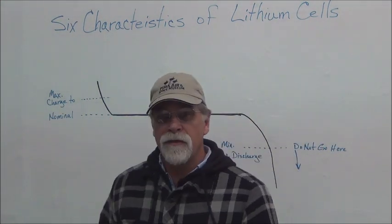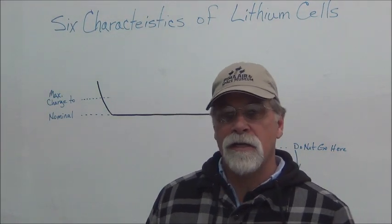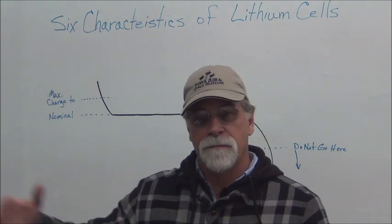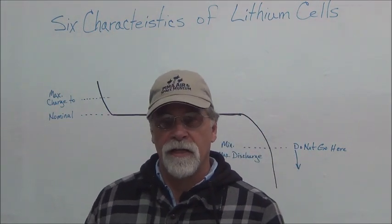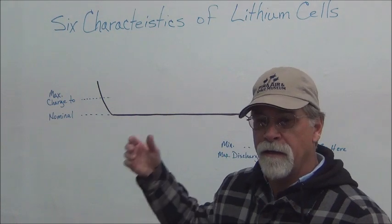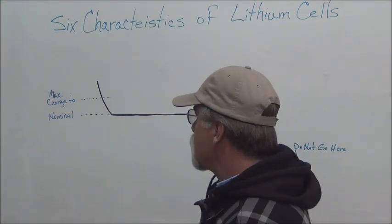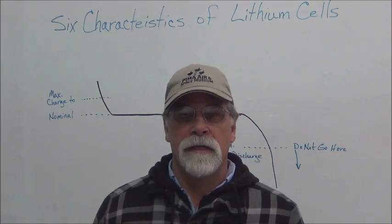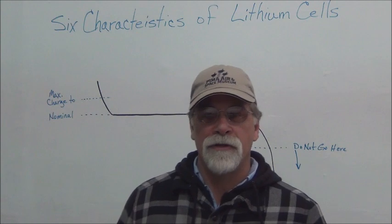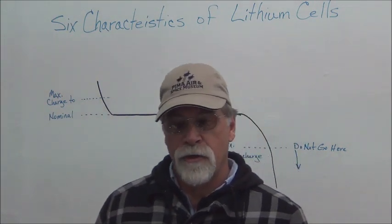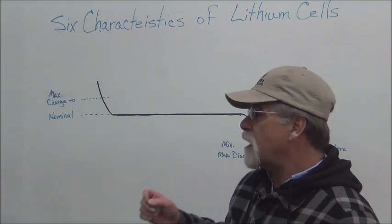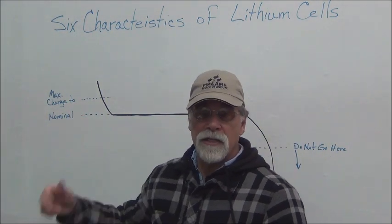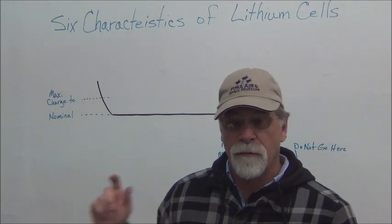So 3.3 volts is what you hear mostly, and that's what we're going to use when we multiply a series pack by. So if you have 50 cells in a series strain, you'd multiply 3.3 times 50. But you also need to remember that all of your other items associated with the conversion that use traction-packed voltage must have an operating range between that maximum cell voltage and that minimum cell voltage. And if you don't, you're going to have problems.